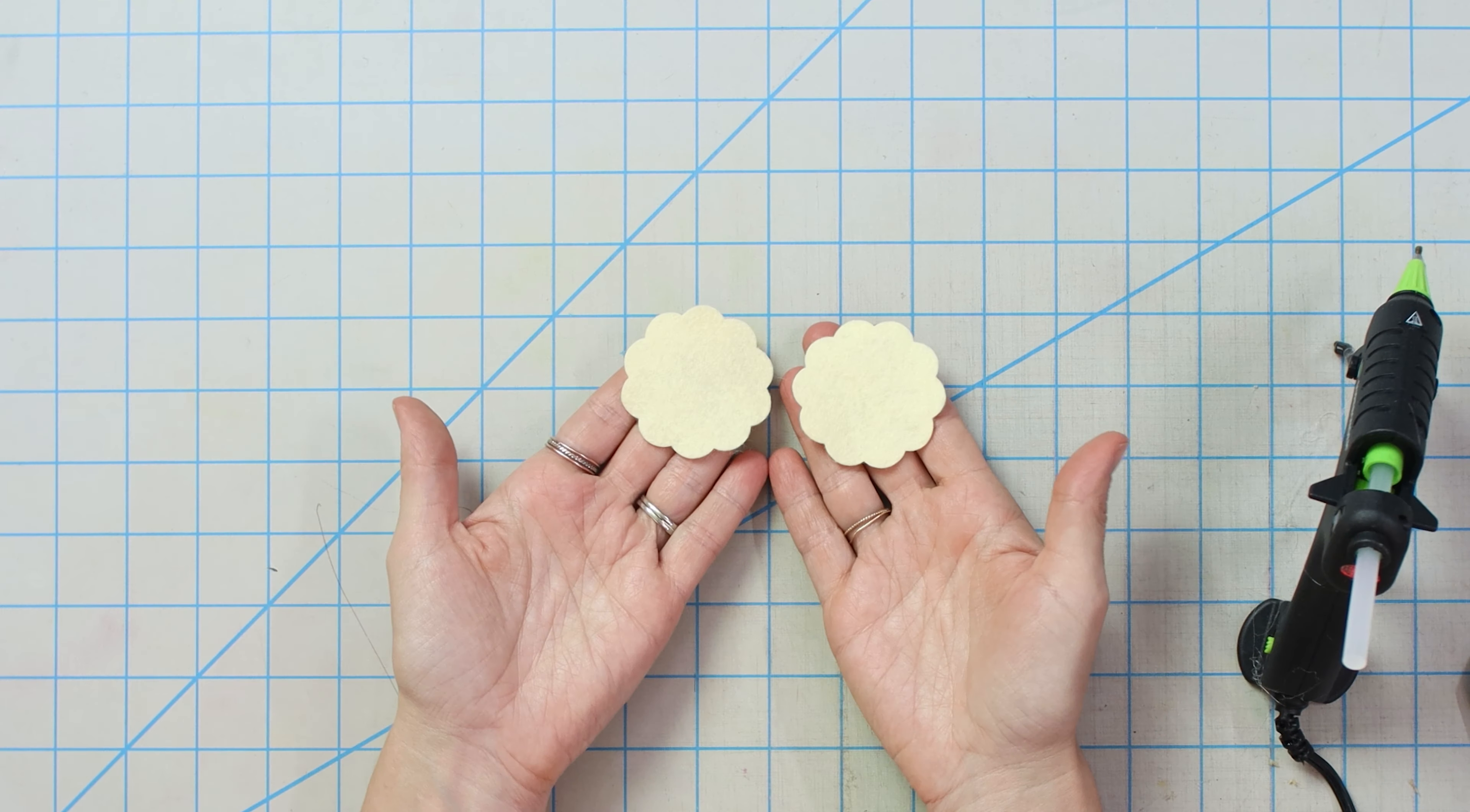Alright, here are our two chamomile daisies. Alright, for our next flower, we're going to go ahead and do like a stock flower here. So I have two of these shapes.